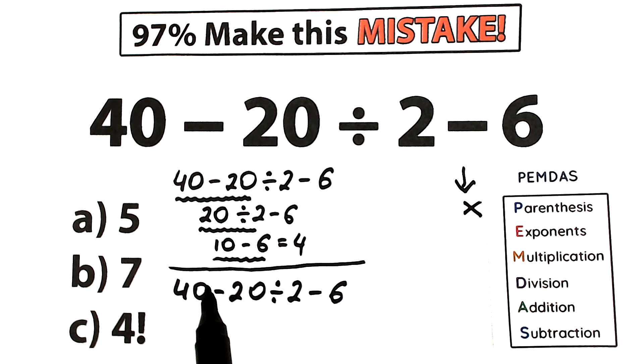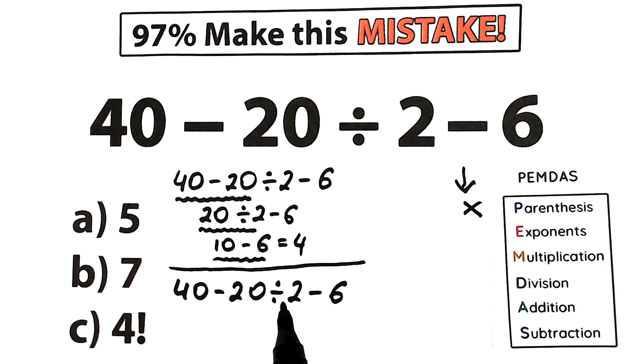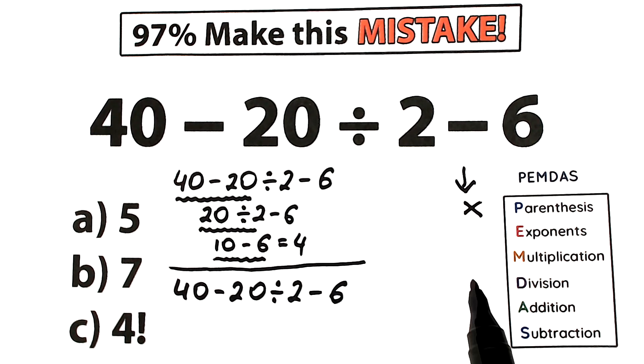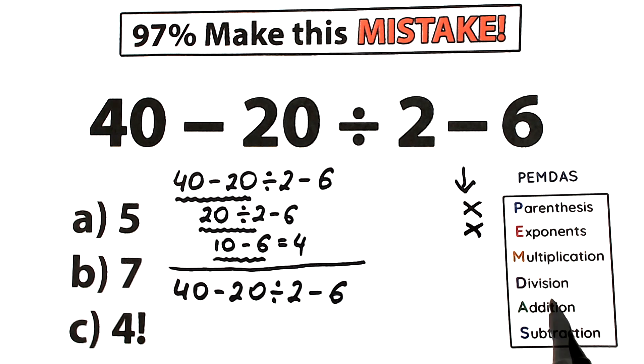Next is exponents — squares, cubes. I don't see any of those, so we skip this part as well. We don't have any exponents, so we move on.